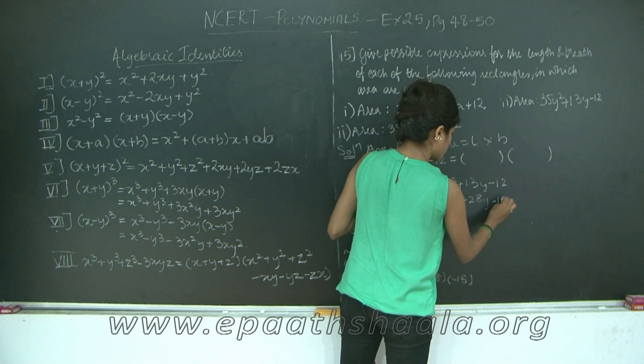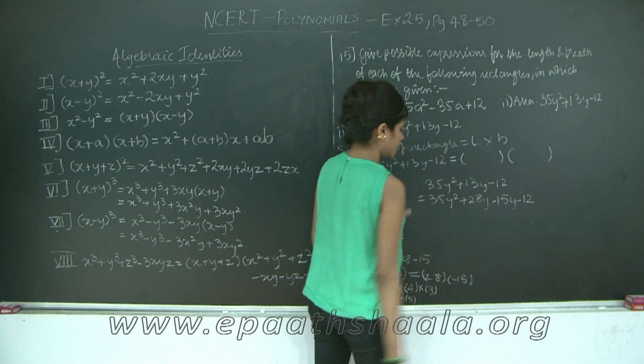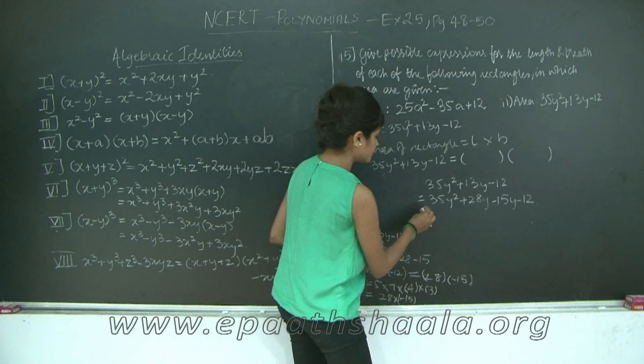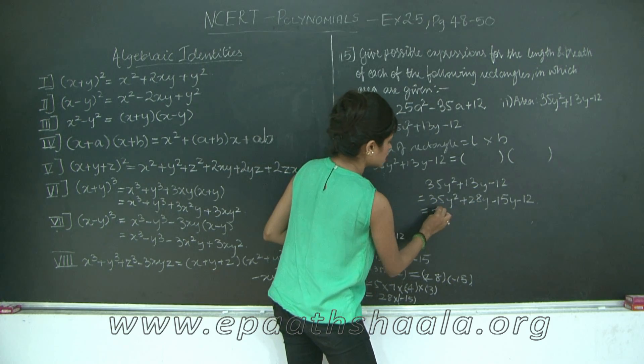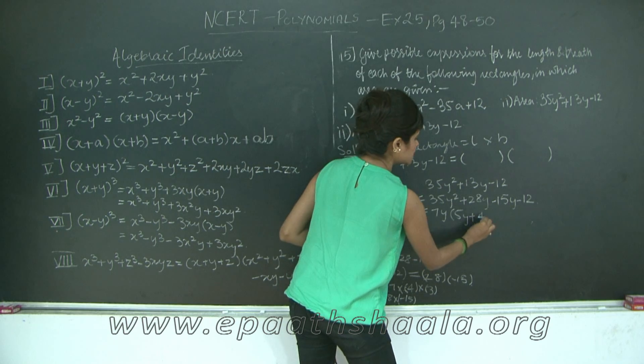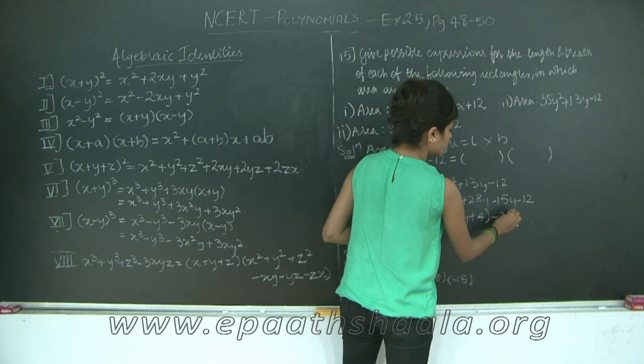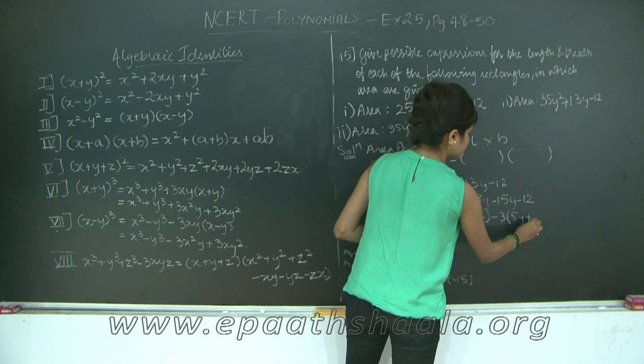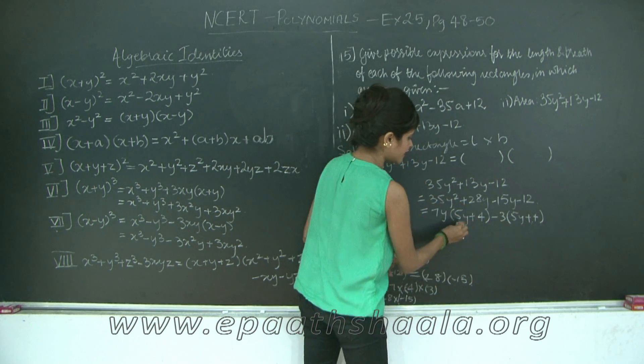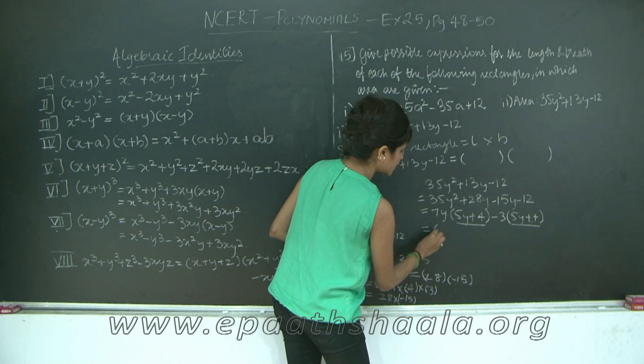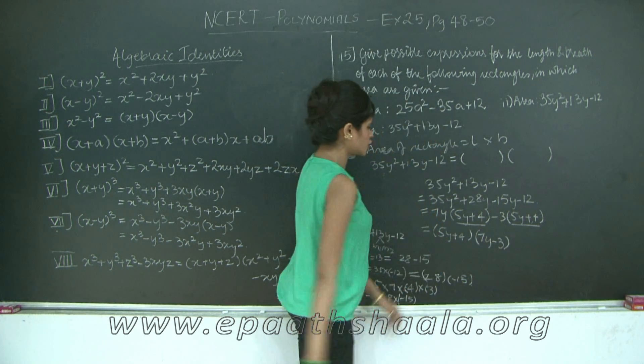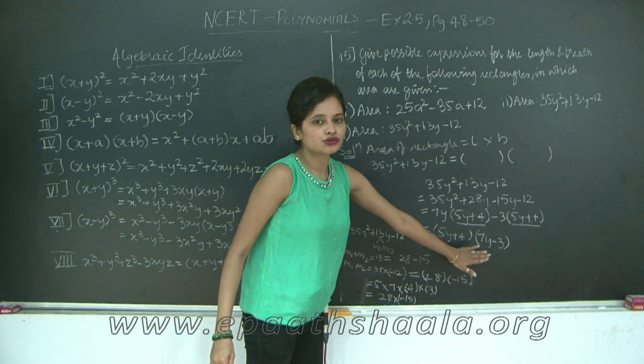See the importance of the sign because here you have positive and here you have negative. Accordingly you have to take your terms. What is common between 35 and 28? You have 7. In between y² and y you have y. So 7×5s are 35y plus 7×4s are 28. Again, here you have 3 common. So 3×5s are 15y plus 3×4s are 12. Notice the negative and positive signs. Since I took negative sign outside my sign inside changes. Now, 5y plus 4 is common for both these terms. So I take it out (5y plus 4) and finally (7y minus 3). I have factorized my polynomial into two factors. Therefore my length will be one of these.